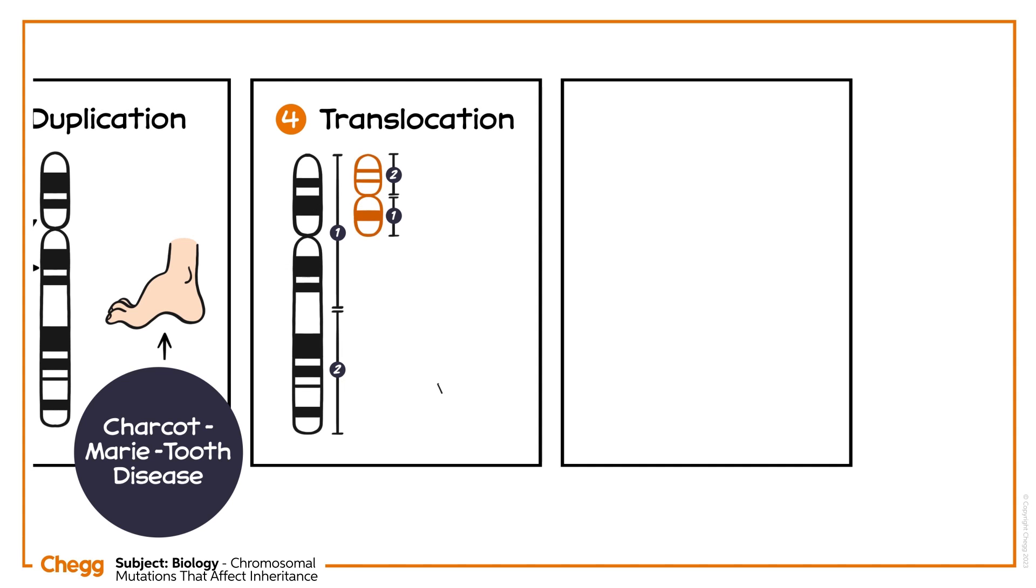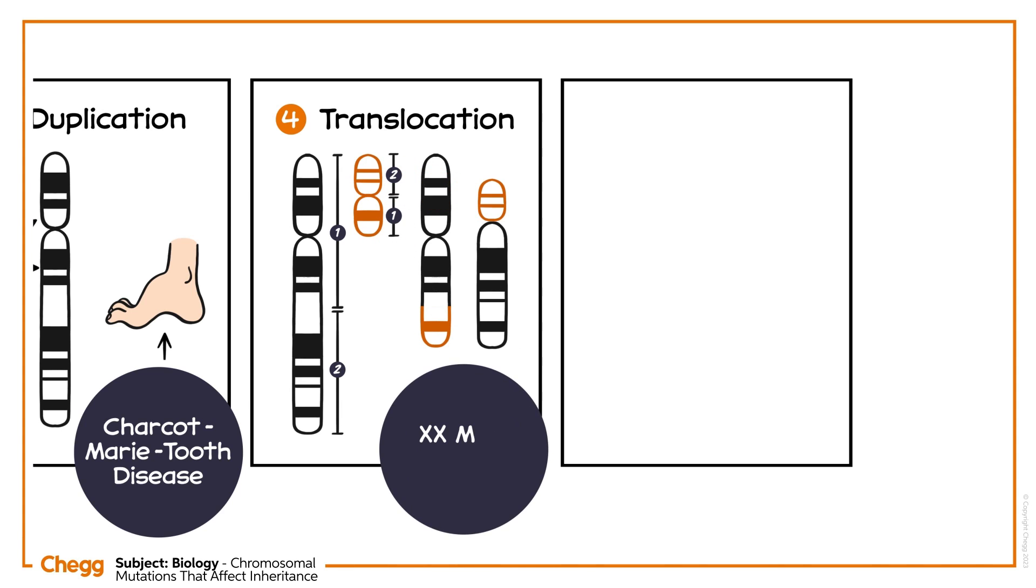Translocation is a type of mutation where one piece of one chromosome has broken off and got attached to another chromosome. A few examples are XX male syndrome and Down syndrome.